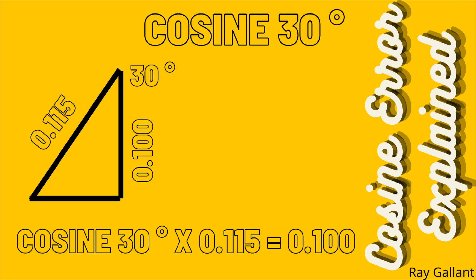Our stack moves a little bit over 115 thou. Whenever we have a cosine error the length actually increases compared to the amount that we actually lift the indicator up. We put a hundred thou gauge block underneath and the indicator moved 115 thou. If we knew we were set at 30 degrees and the reading was 115, we could calculate that we only moved 100 thou up — cosine 30 degrees times 115 equals 100 thou.